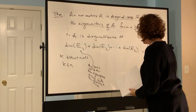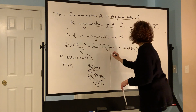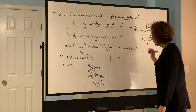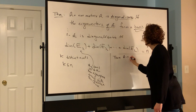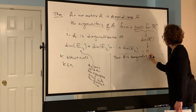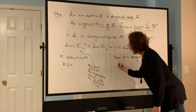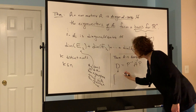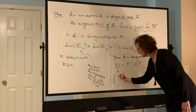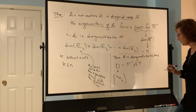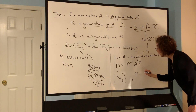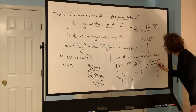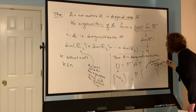Let's close with where P comes from. If A is diagonalizable, then D equals P-inverse A P, where D is the diagonal matrix with the eigenvalues on the diagonal and P is the matrix whose columns are the ordered eigenvectors.